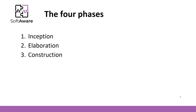The third phase is the construction phase. The primary objective is to build the software system. The main focus is on the development of components and other features of the system. This is the phase where the bulk of the coding takes place.